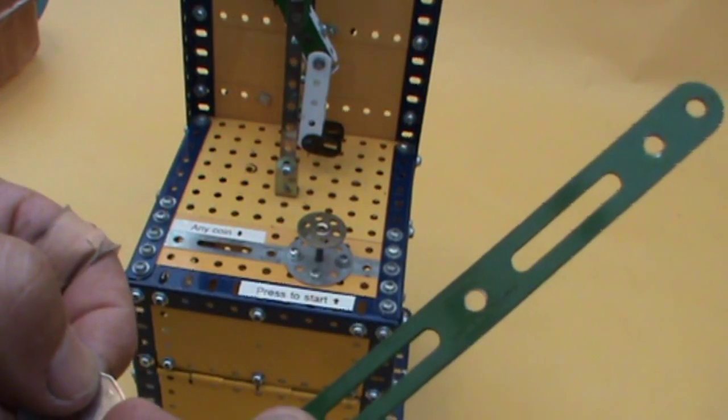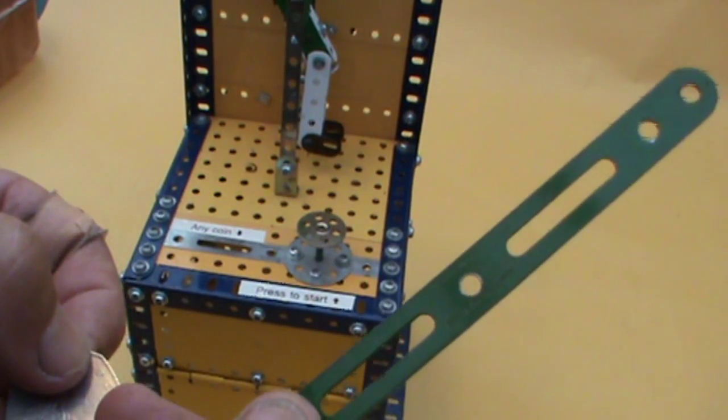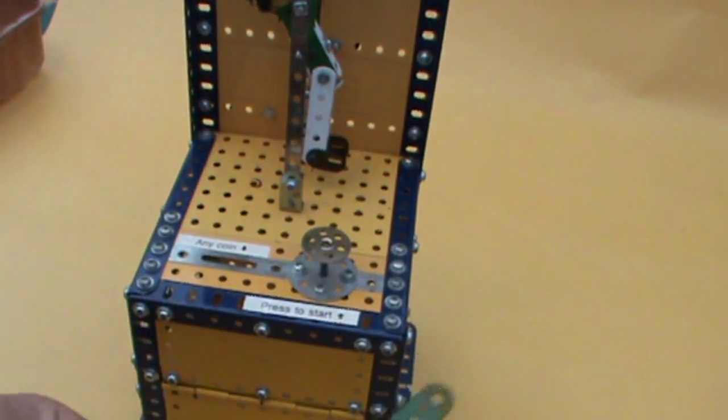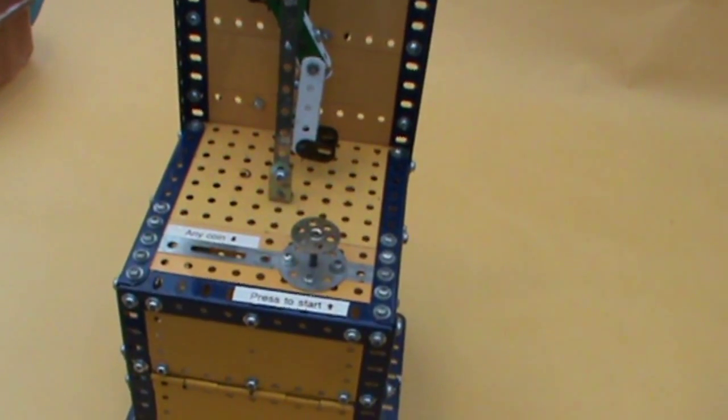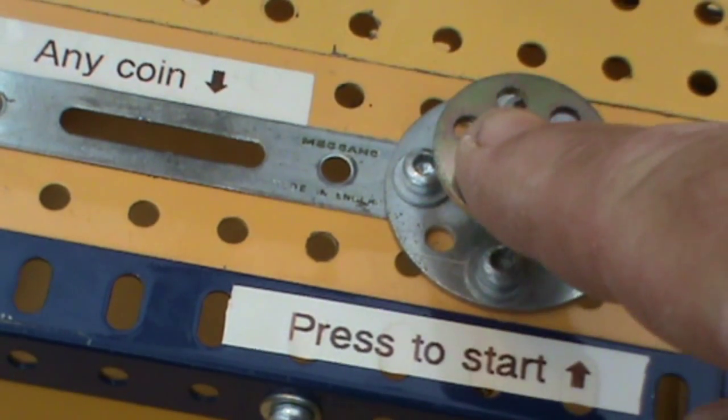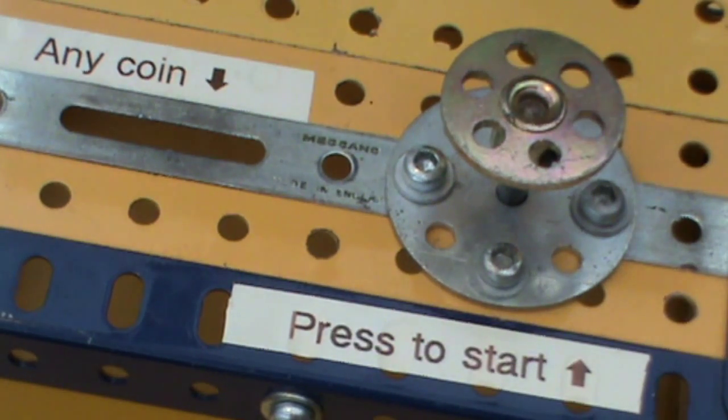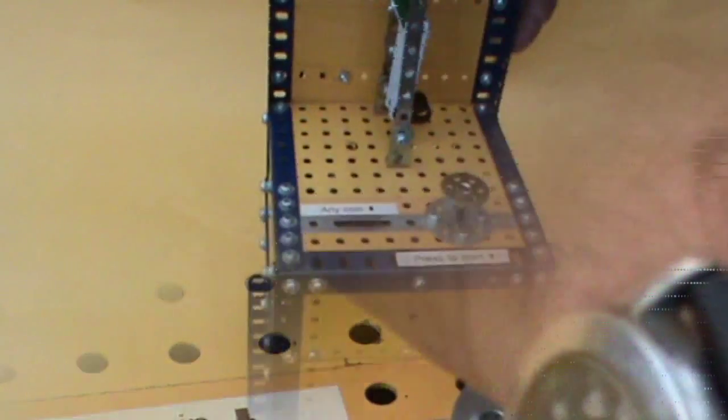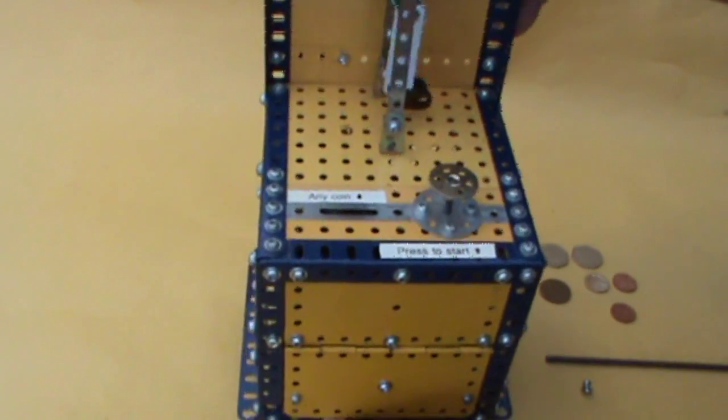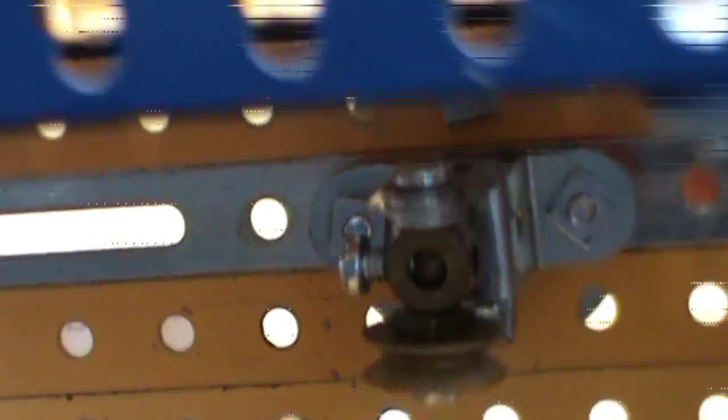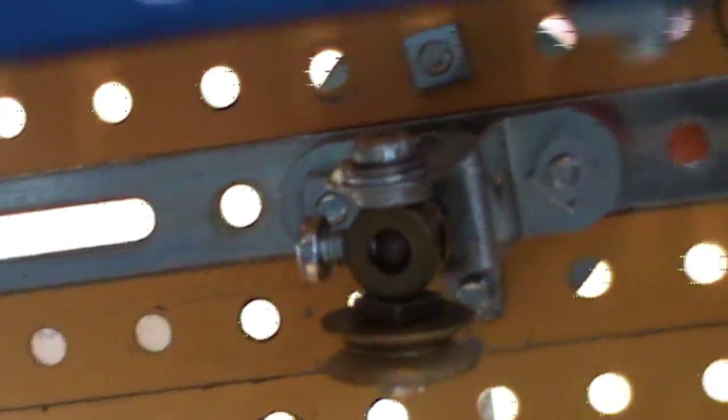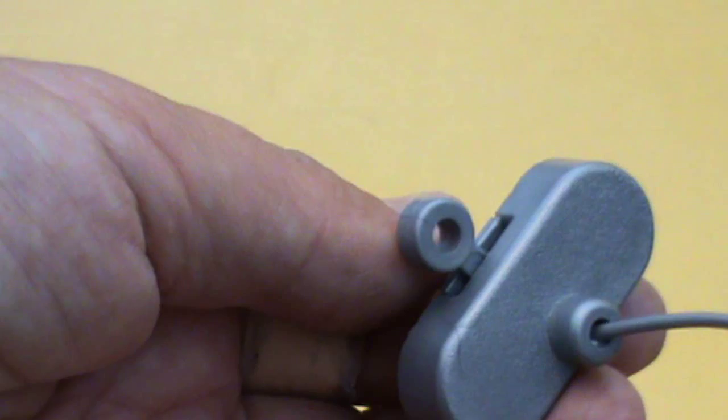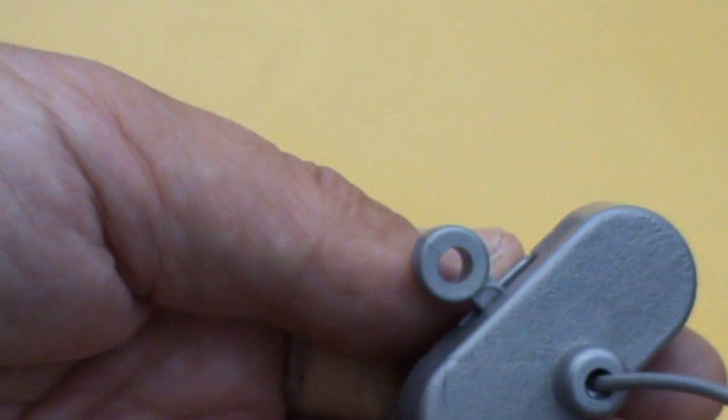The automaton will work with any coin that passes through a standard five and a half inch slotted strip. Inside the case, the push button moves a roller up and down. The electric motor is switched on by the lever in the battery box. No other wiring is needed.